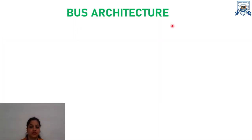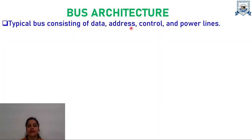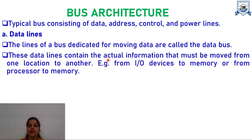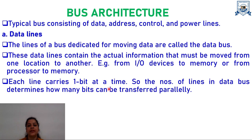Let's discuss the bus architecture. A typical bus consists of data, address, control, and power lines. The data lines are dedicated for moving data, and the collection of these lines is called the data bus. These data lines contain the actual information that must be moved from one location to another — for example, from I/O devices to memory or from processor to memory. Each line carries one bit at a time, so the number of lines in the data bus determines how many bits can be transferred in parallel. In this way, the width of the data bus determines overall system performance.